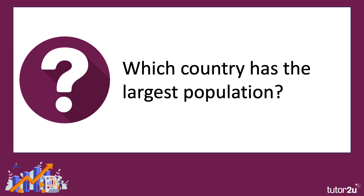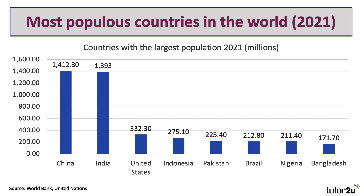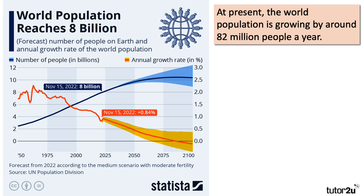Which country in the world has the largest population? Well, the answer is China, but only just and only for a short while — 1.4 billion people living in China, but India is catching up very, very quickly. Indeed, the Indian population will soon overtake that of China because of differences in their annual population growth rates. In 2022, by most estimates, the world surpassed the 8 billion mark for the size of the global population.